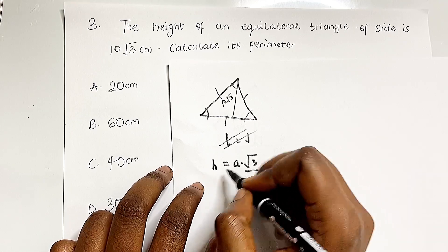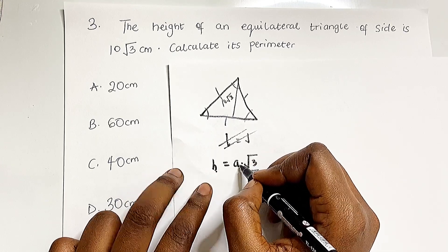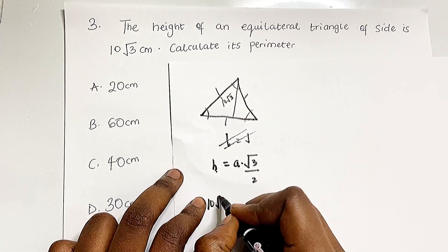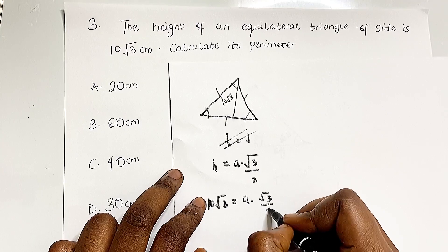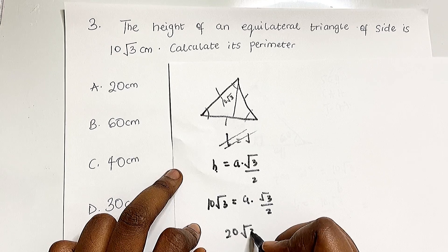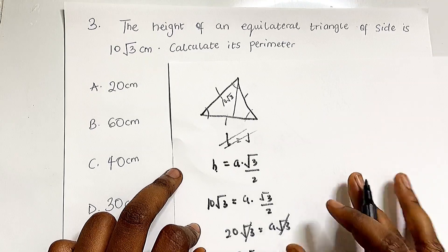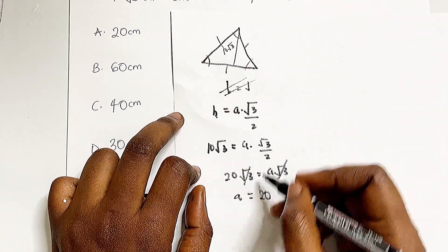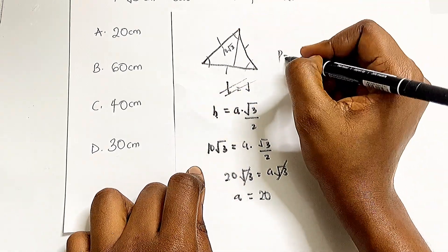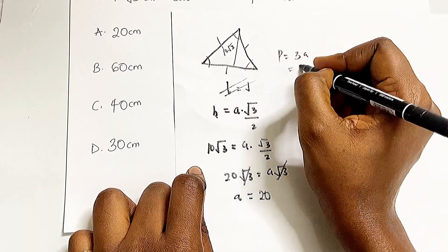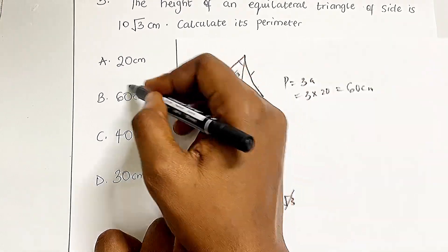Here H is the height and A is the side length. We know H = 10√3, so 10√3 = (A√3)/2. Multiplying both sides by 2: 20√3 = A√3. The √3 cancels, giving A = 20. Each side is 20, so the perimeter is 3 × 20 = 60 centimeters, which is option B.